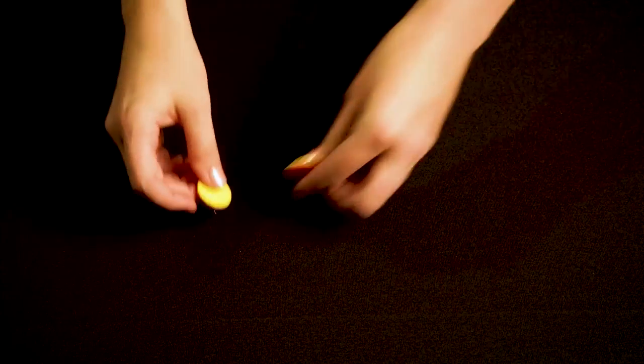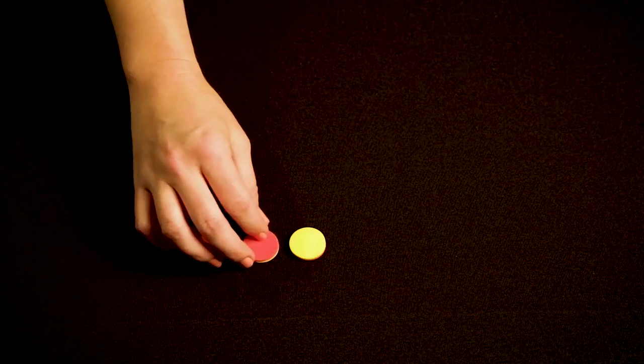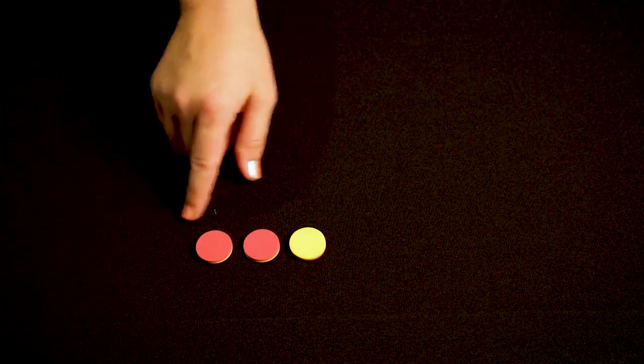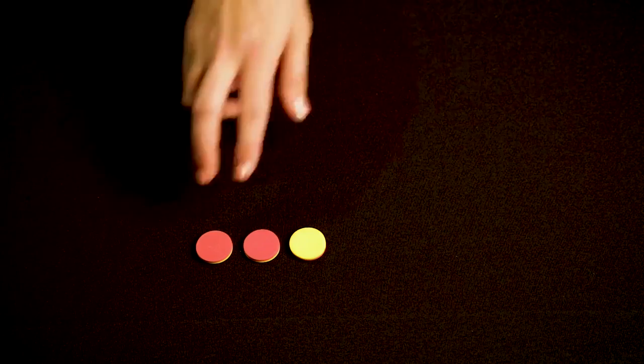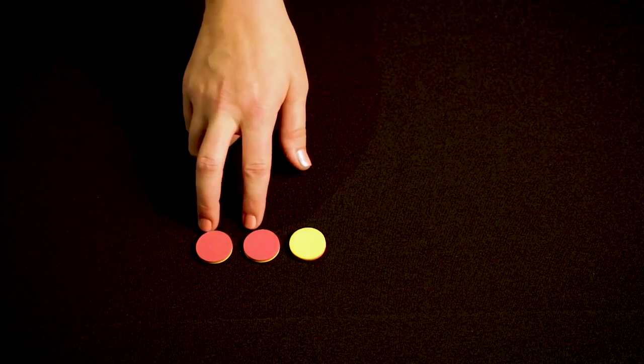In addition to the area model we also have the set model of fractions. With the set model of fractions I have any set and I show parts of that set in a different way. So for example by flipping those over to show the red side of the counter here I have shown the fraction two-thirds.